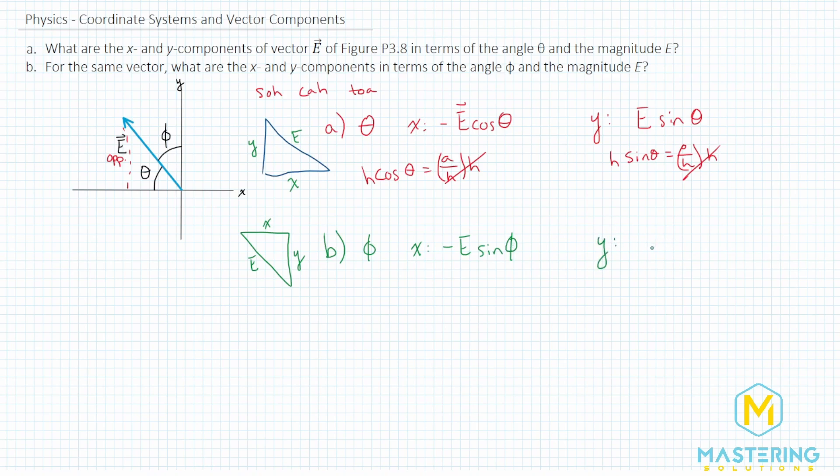And the y component is the exact same process right here for this component, which will be cosine. So the adjacent in this case will be positive vector E times the cosine of phi.